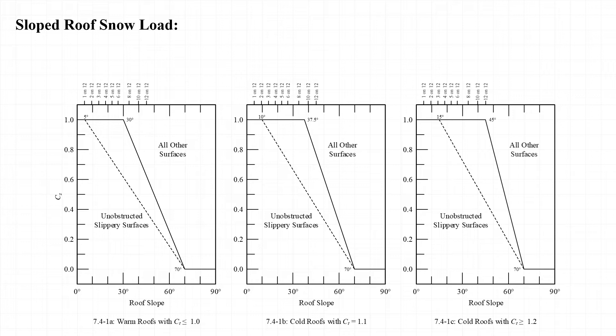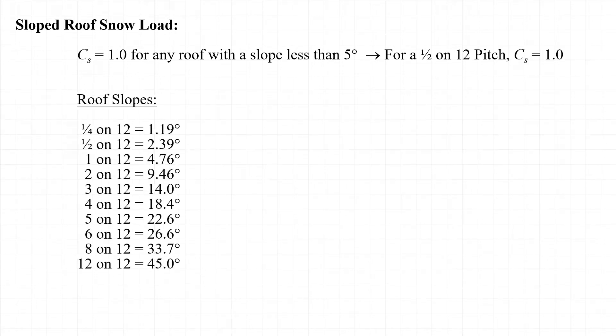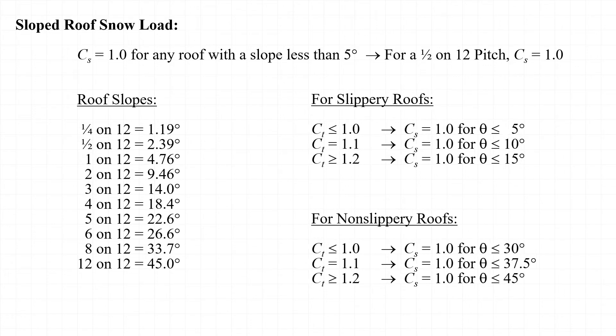The next step is to calculate the sloped roof snow load P sub S. The roof slope factor C sub S is determined from figure 7.4-1 of the 2016 edition of ASCE 7. From the three figures we can see that C sub S is equal to 1.0 for any roof with a slope less than five degrees. On this slide I've tabulated the roof slopes corresponding to different roof pitches, and from figure 7.4-1 I've noted the cutoff slopes where C sub S equals 1.0.